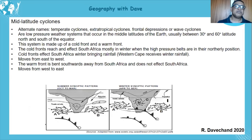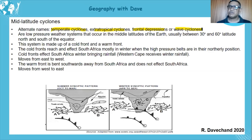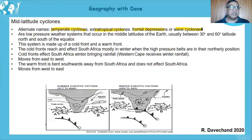Let's start off with the basics of the mid-latitude cyclone. First of all, we need to know the alternate names: temperate cyclone, extra-tropical cyclone, frontal depression, wave cyclone. These are various names that can be used for mid-latitude cyclones, but the common term found in exams is mid-latitude cyclones.